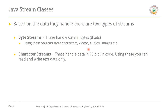Based upon the data they handle, there are two types of streams: byte streams and character streams. Byte streams handle data in bytes — 8-bit data — and by using byte streams we can store characters, videos, audios, and images. But by using character streams we can only handle 16-bit data, so these streams can only be used to read and write text data only.